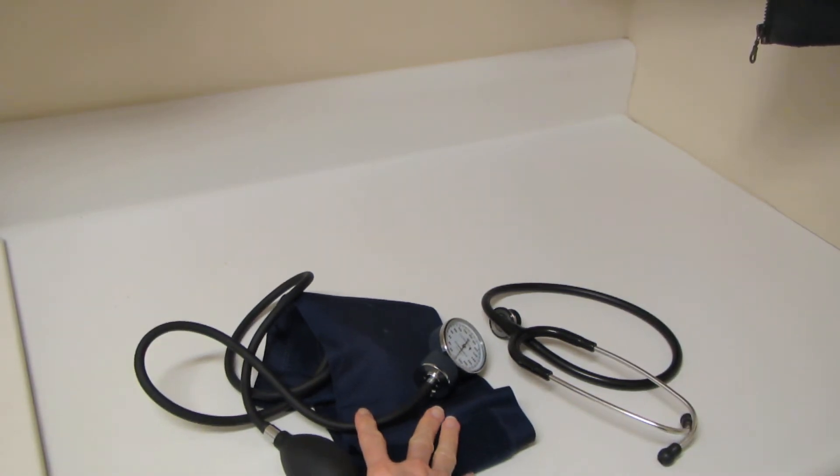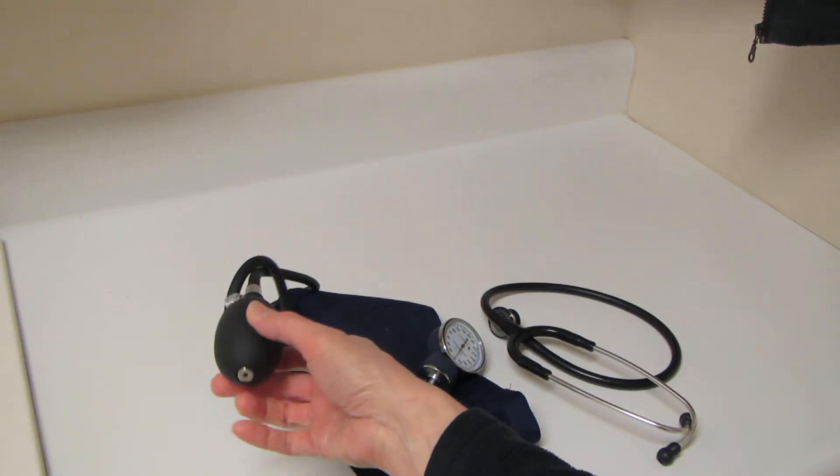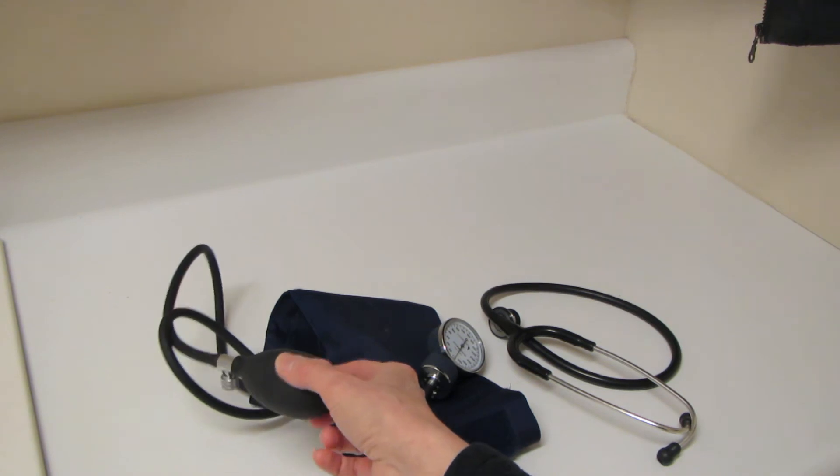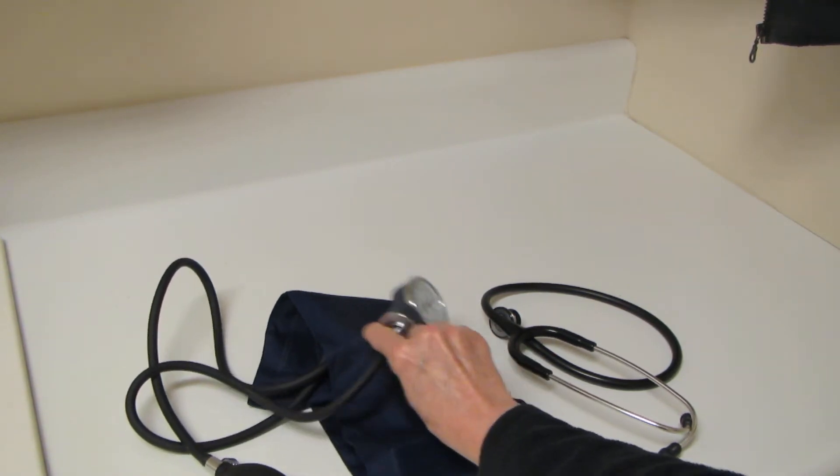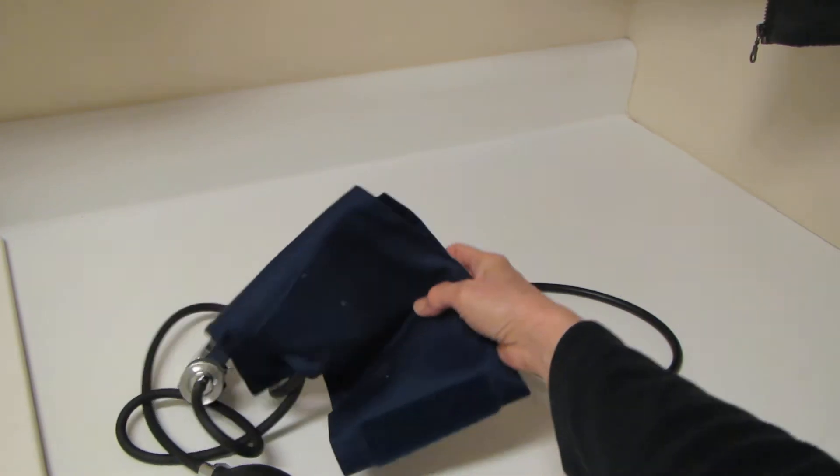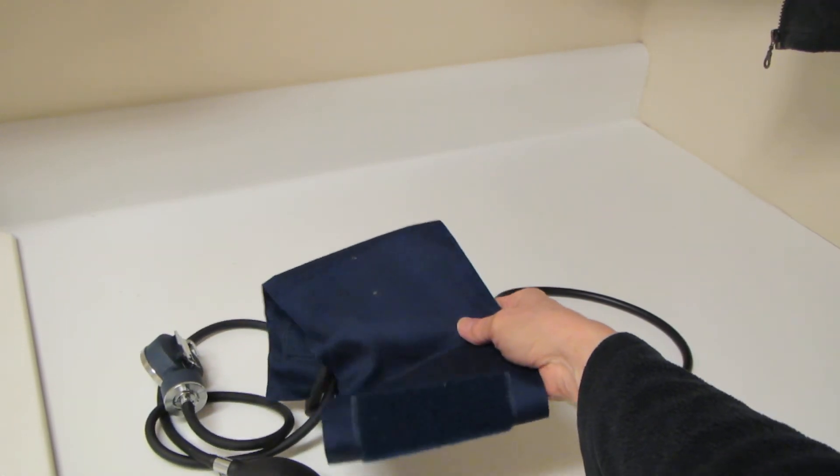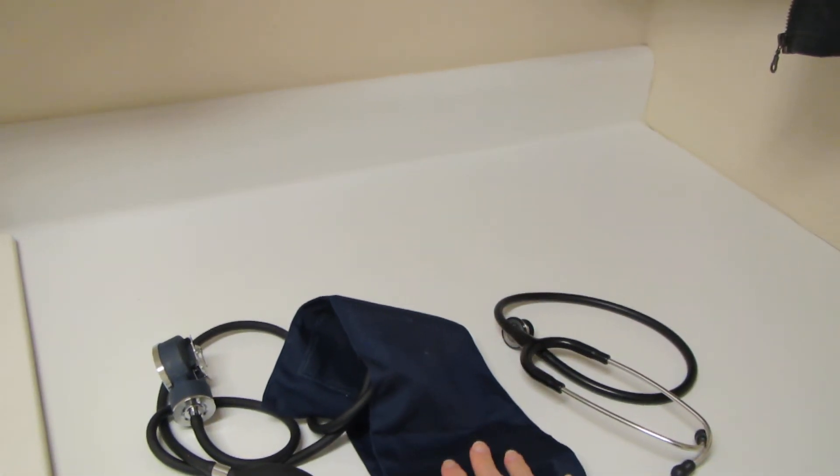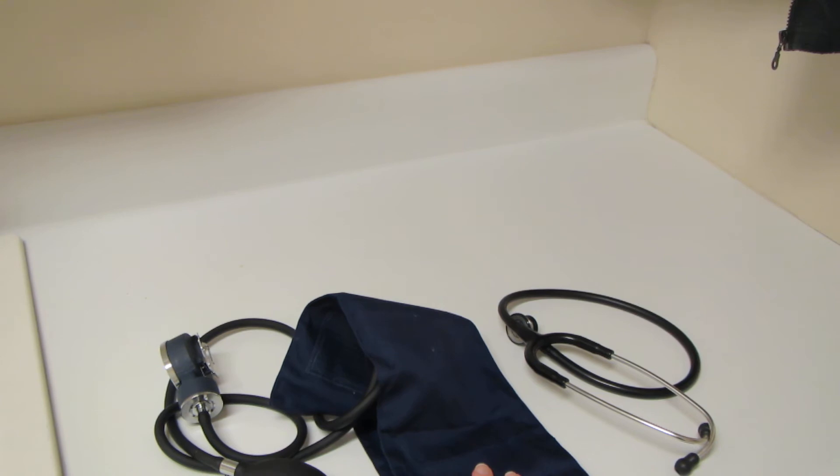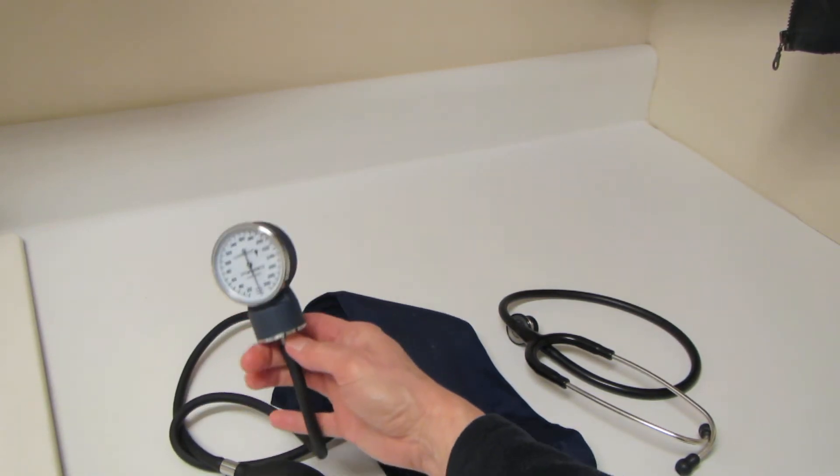So first thing we have here is the instrument itself. It's composed of three different pieces. We've got a bulb that's used to pump air into this cuff over here. The cuff is what fits across the patient's arm, and we always want to make sure we're above, or superior to, or proximal to the bend in the elbow.